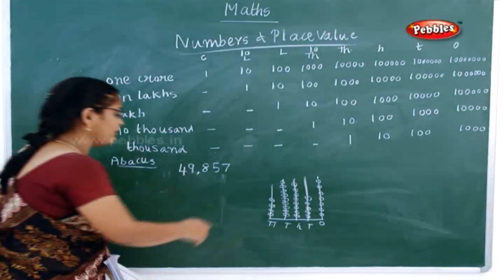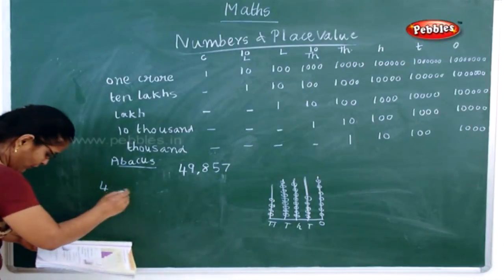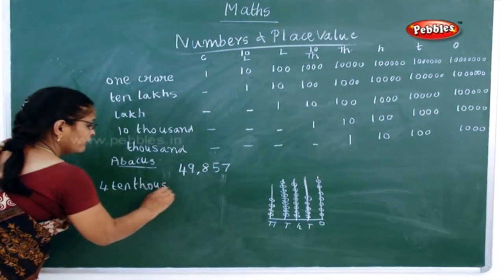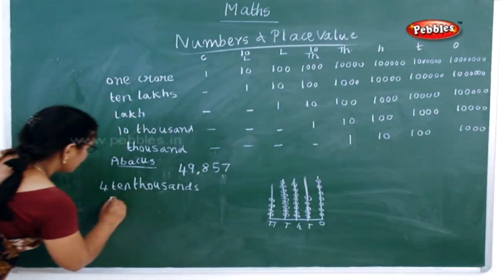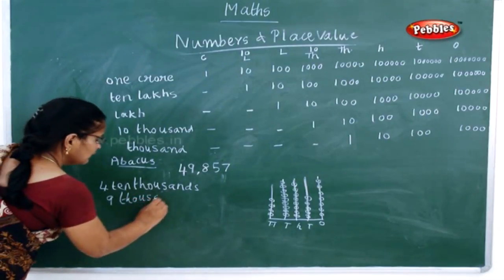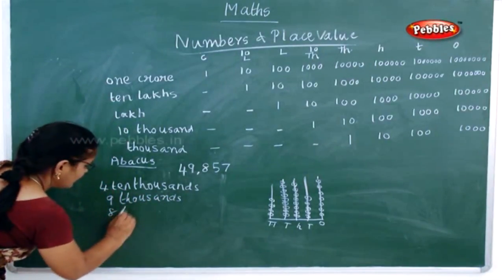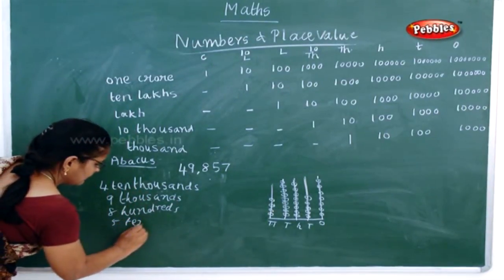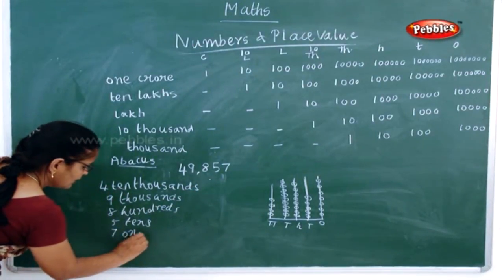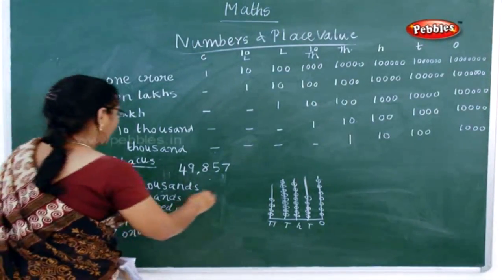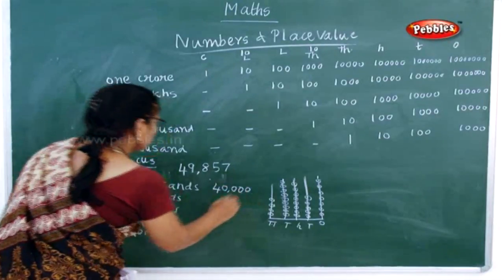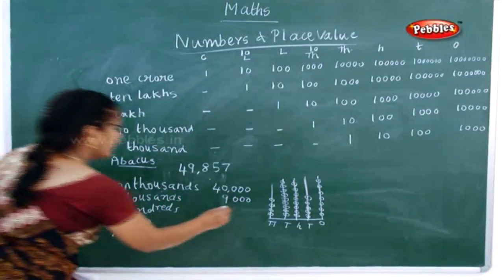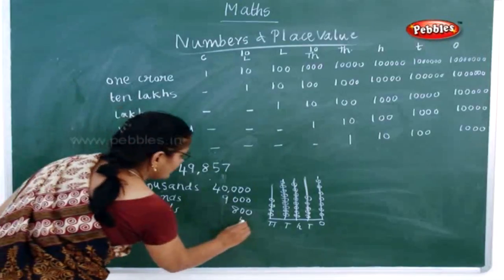Now how will you expand when you expand? You will write: four ten-thousands — how many ten-thousands are here? Four ten-thousands. Now how many thousands? Nine thousands. Now how many hundreds? Eight hundreds. Now how many tens? Five tens. And how many ones? Seven ones.